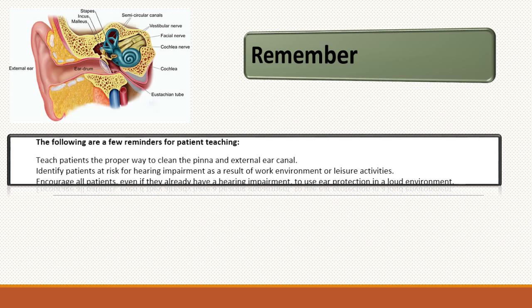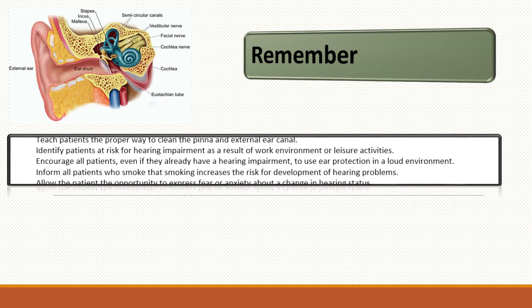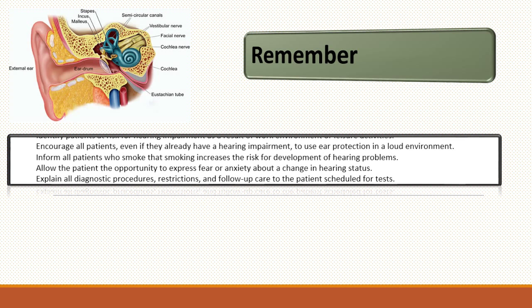In summary, here are some reminders for patient teaching. Teach the patient the proper way to clean the external ear and identify patients at risk for hearing impairment from their work or lifestyle. Encourage patients who already have a hearing impairment to use ear protection in a loud environment. Inform patients who smoke that smoking increases the risk for developing hearing problems. Allow the patient the opportunity to express any fear or anxiety because of their hearing loss. Explain all diagnostic procedures, restrictions, and follow-up care for patients scheduled for tests and for patients who cannot hear.